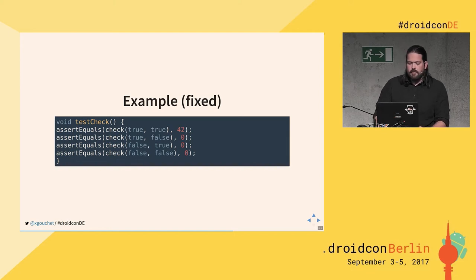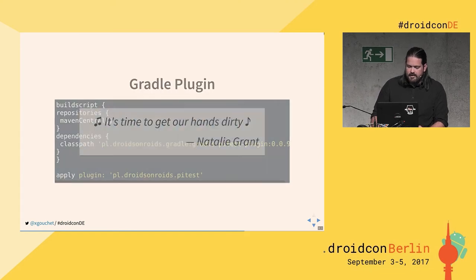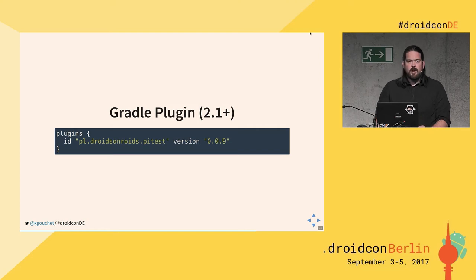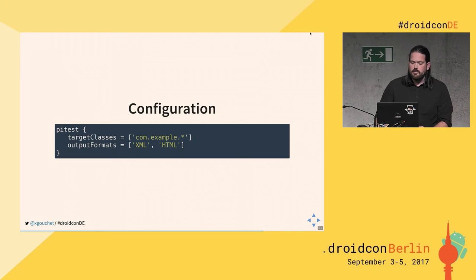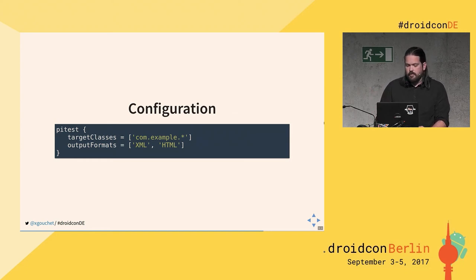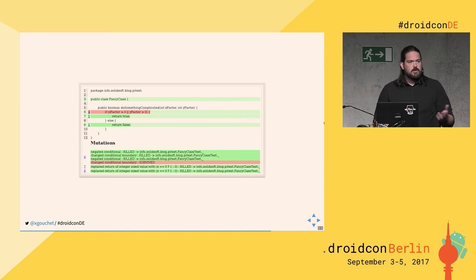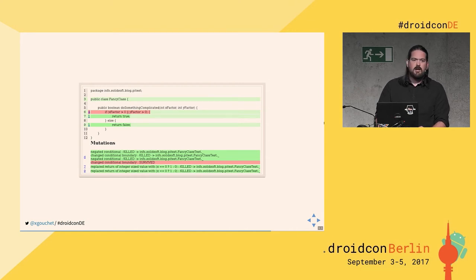There's a plugin for Android projects that helps you run mutation testing. It's very easy to add to your Gradle project, and it's quite configurable: you just specify which classes to mutate — for example, every class in the com.example package — and define your output formats, like both XML and HTML. The result looks similar to a code coverage report, but instead of saying a line wasn't covered, it says a mutation on this line was not caught by the tests.